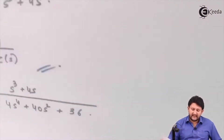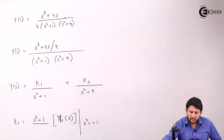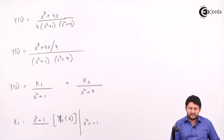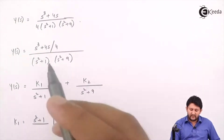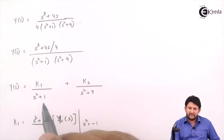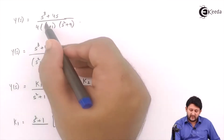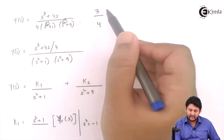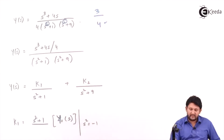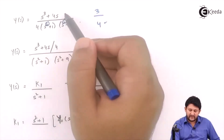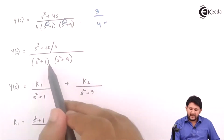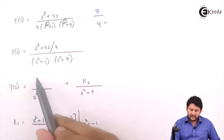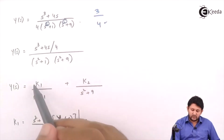For partial differentiation, check the degree of the denominator. If the degree of the denominator is greater than the degree of the numerator, you can apply partial differentiation. Here the degree of the denominator is 4 and the numerator is 3, so it is greater — meaning you can apply partial differentiation. The constant term is kept in the denominator bracket.